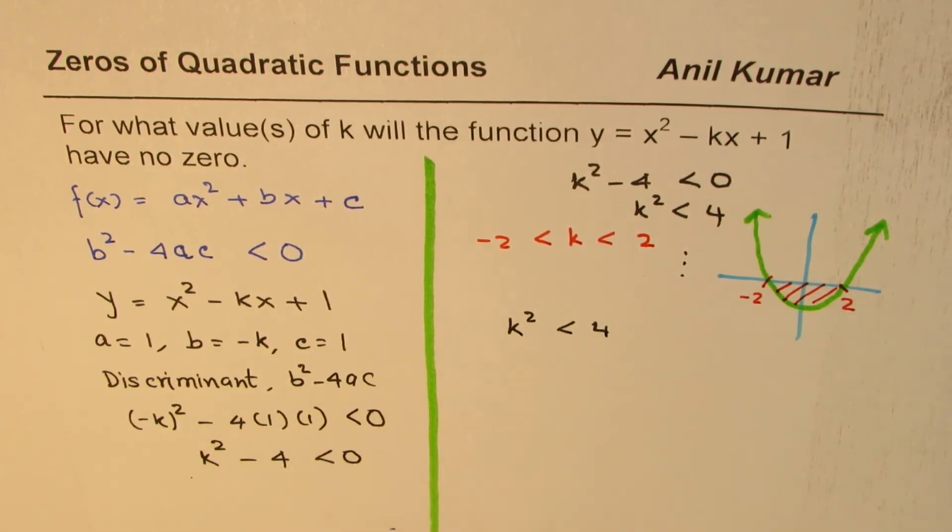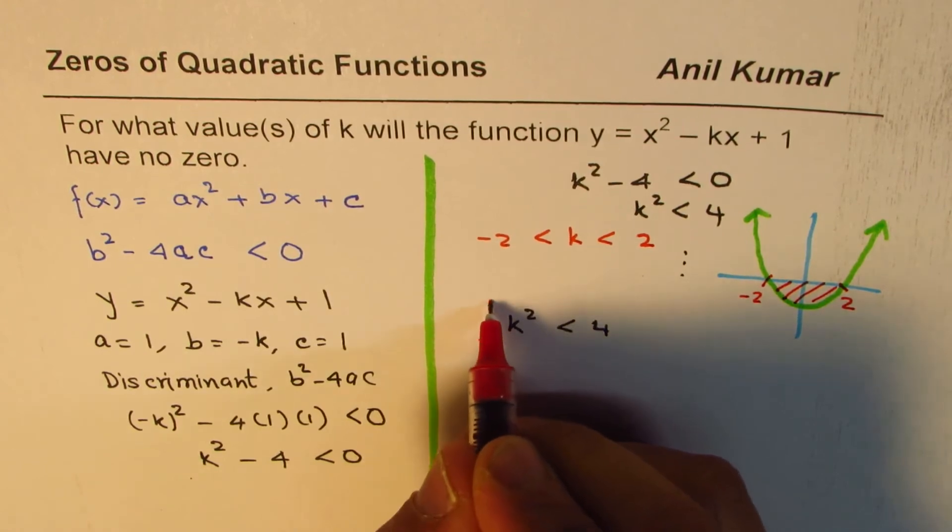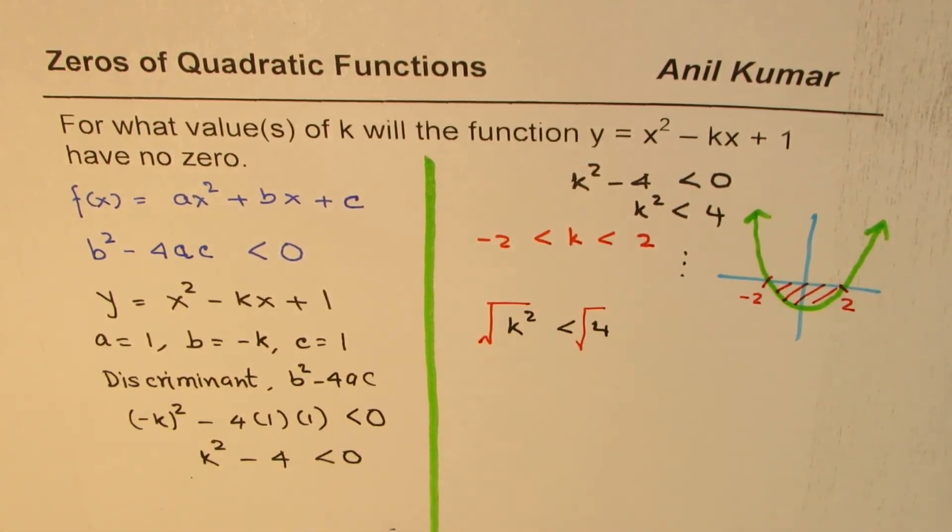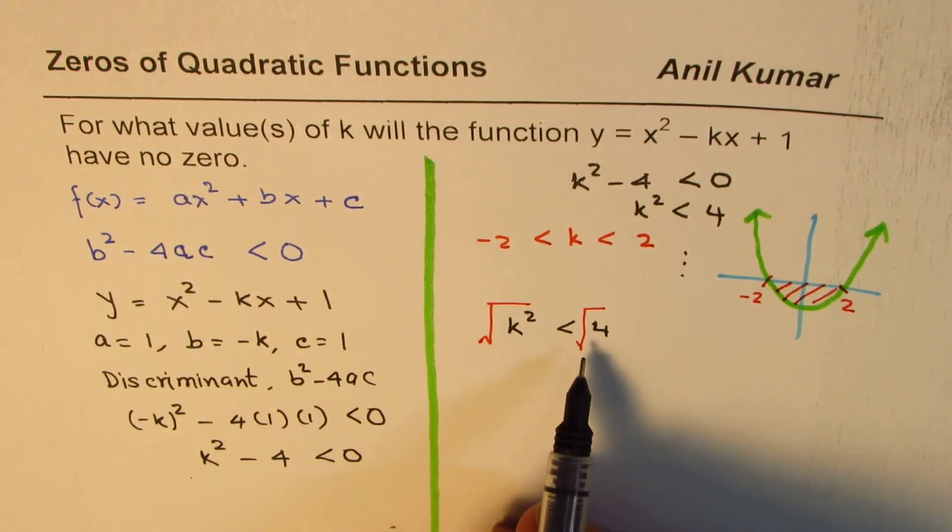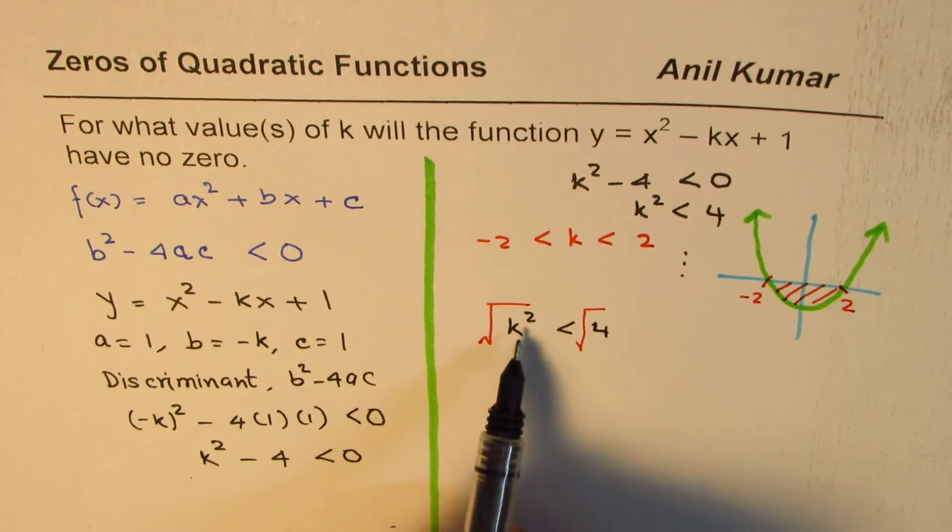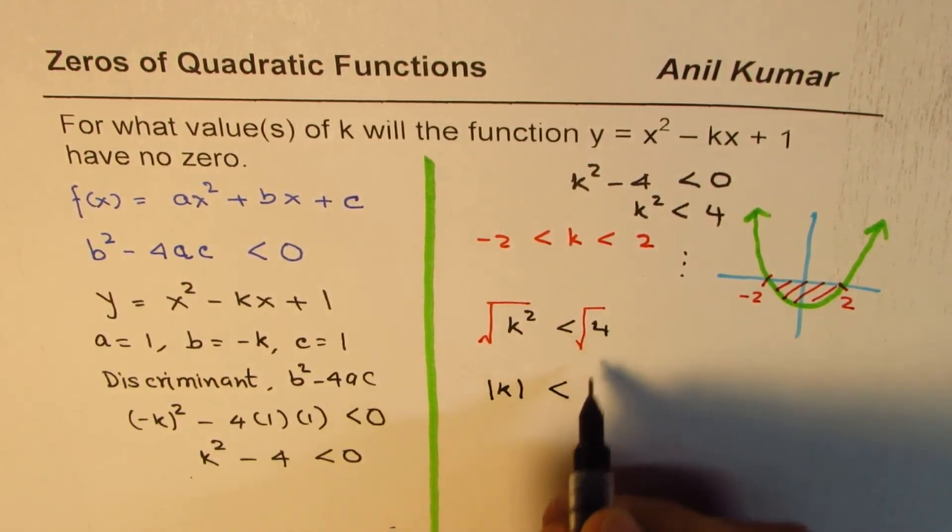So I'm doing square root on both the sides. This is the function which we want to do. What happens when we do this? Well, square root of k² is absolute value of k, so absolute value of k is less than square root of 4 is 2.